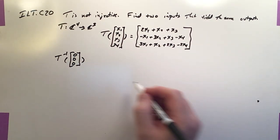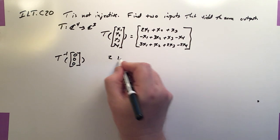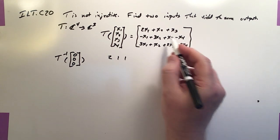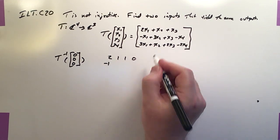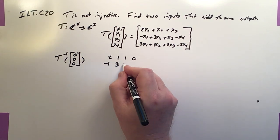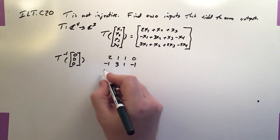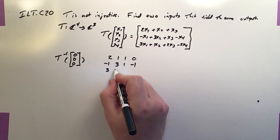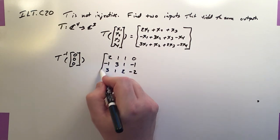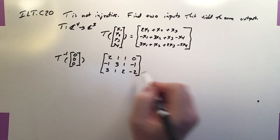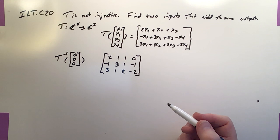And to do that, we're just going to take this guy. 2, 1, 1, 0, negative 1, 3, 1, negative 1, 3, 1, 2, and negative 2. And then we're just going to find the null set of this guy. I'm not going to put the row of zeros in because we don't really need them.